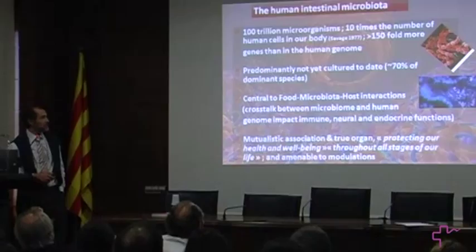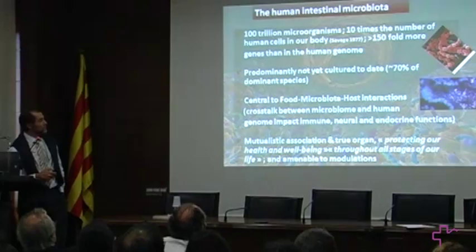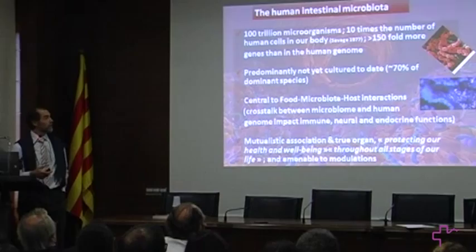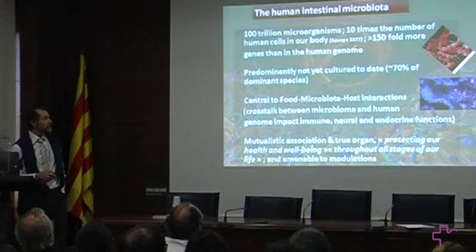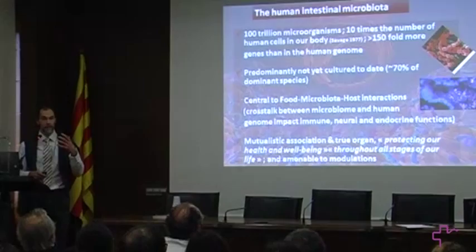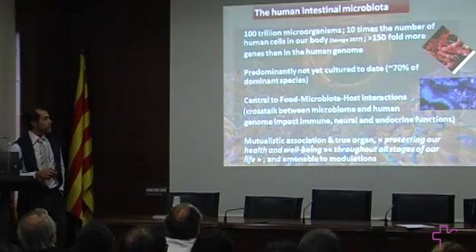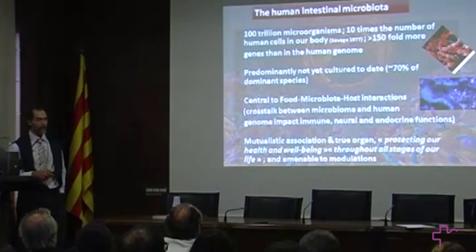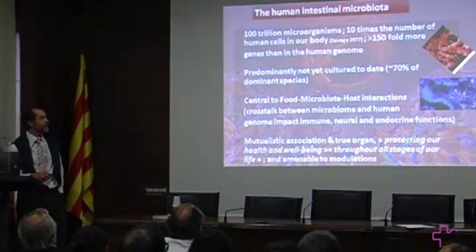What are we talking about? The human intestinal microbiota consists of 100 trillion microorganisms for each individual — 10 times more individual cells than we have human cells in our body, and probably more than 150-fold the size in terms of number of genes compared to our human genes. It's made of predominantly not-yet-cultured microbes, leaving hope for progress in cultivation, and it's really central to food, microbe, and microbe-host interactions.